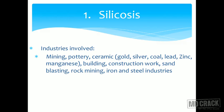Gold, silver, coal, lead, zinc, manganese — a lot of metals — building, construction, sand blasting, rock mining, iron and steel industry. So basically anywhere you have a blast, you have sand, you have particulate pollutants and pottery. These kinds of industries are all prone to silicosis.